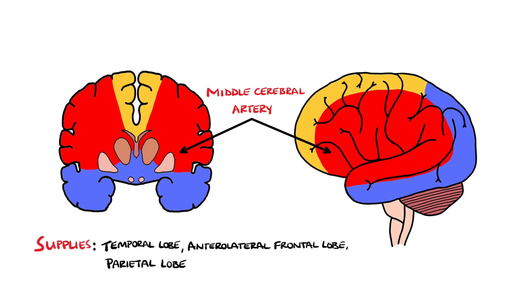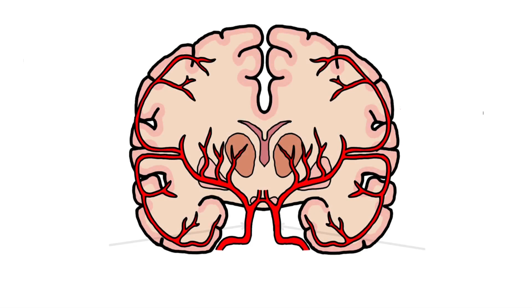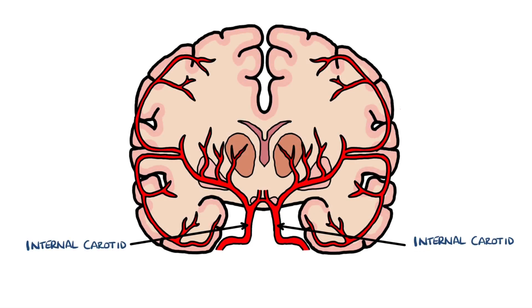The middle cerebral artery supplies most of the temporal lobe, the anterolateral frontal lobe, and the parietal lobe. The middle cerebral artery comes off the internal carotid artery and is divided into segments.